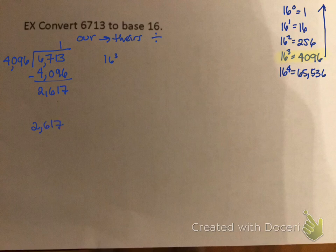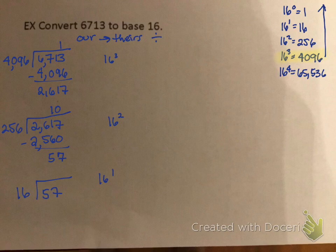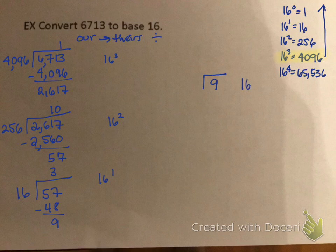Take 2617 ÷ 256 = 10. So 10×256 = 2560, and 2617 − 2560 = 57 remainder. Drop to 16¹: 57 ÷ 16 = 3. Then 3×16 = 48, and 57 − 48 = 9 remainder. Drop to 16⁰, which is 1: 9 ÷ 1 = 9. So the digits are: 1, 10, 3, 9.